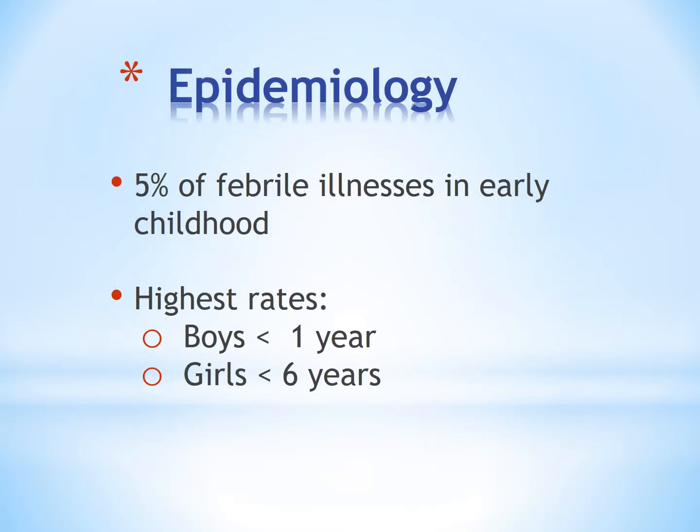In terms of epidemiology, urinary tract infection comprises 5% of febrile illnesses in early childhood. The highest rates of UTI are among boys less than 1 year and girls less than 6 years of age.